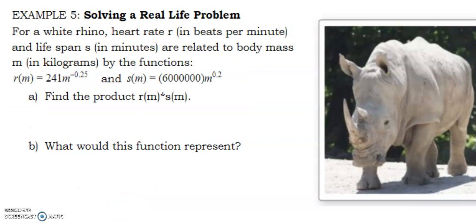All right, last one is going to be one that you need your calculator for. We're going to look at a real-life problem. For a white rhino, the heart rate in beats per minute, R, and lifespan S in minutes are related to body mass. So our inputs, if we were to graph these, are based on the mass of the rhino. Find the product R(M) times S(M). So I'm going to take R(M), 241M^(-0.25), times 6,000,000M^0.2.